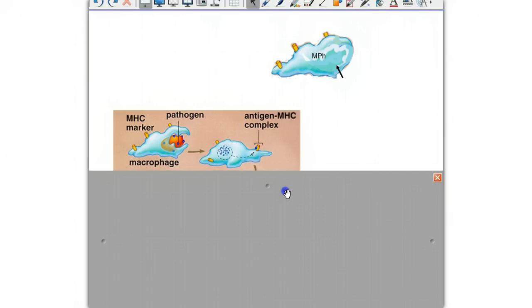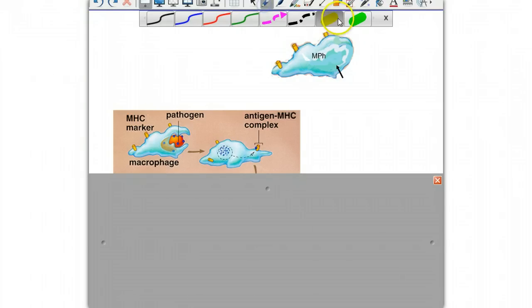So when the macrophage digests the pathogen, it doesn't destroy all the antigens. It processes the antigens and moves them to its own surface, producing an MHC antigen complex. This is the signal that gets the attention of the lymphocytes.